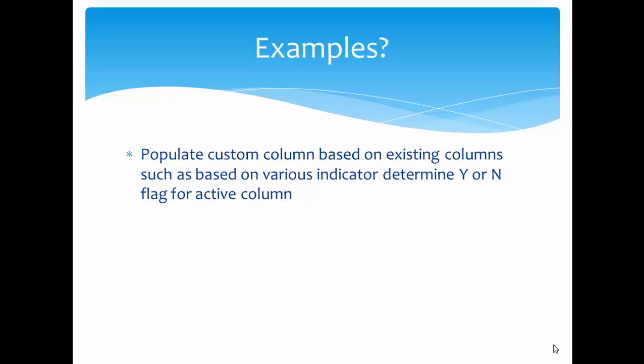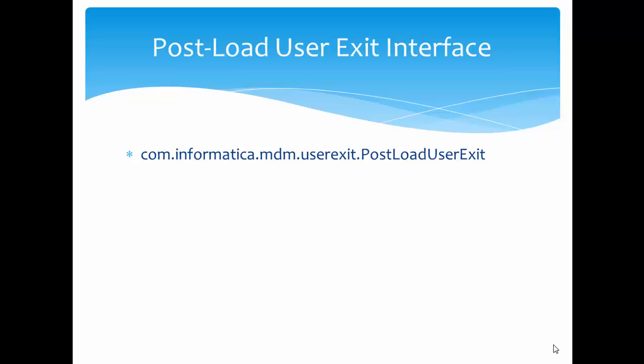One example is populating a custom column based on an existing column. For example, if you have two columns — column one and column two — and you want to populate column two based on the value in column one, you can use the post load user exit. A specific example: based on a business or customer indicator, you can determine a Y or N flag for an active column. If a person has a death date, you can mark the record as inactive by setting the active column to N.